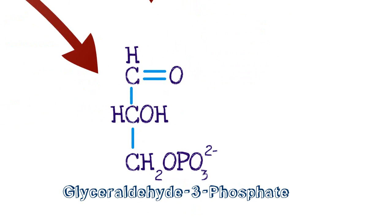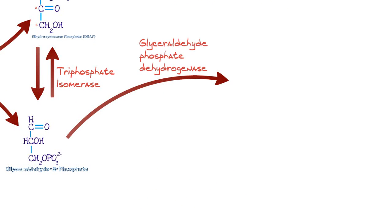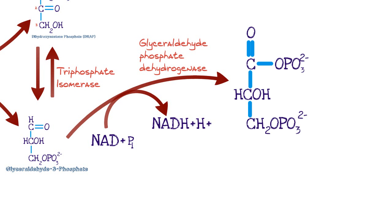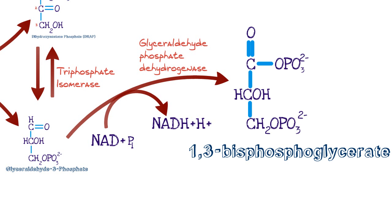Once you have glyceraldehyde-3-phosphate, the next step is a dehydrogenase reaction. Glyceraldehyde-3-phosphate dehydrogenase comes in, removing hydrogen ions. NAD+, a hydrogen ion carrier, and an inorganic phosphate group come in. The NAD+ picks up hydrogen ions and a phosphate group is donated. In this process, we produce 1,3-bisphosphoglycerate, otherwise known as 1,3-BPG. This molecule is important not only for glycolysis, but also because 1,3-BPG is a precursor to 2,3-BPG — 2,3-bisphosphoglycerate — which regulates hemoglobin's affinity for oxygen in red blood cells.